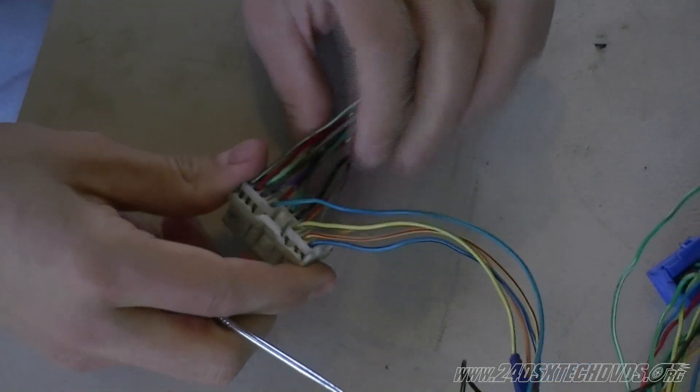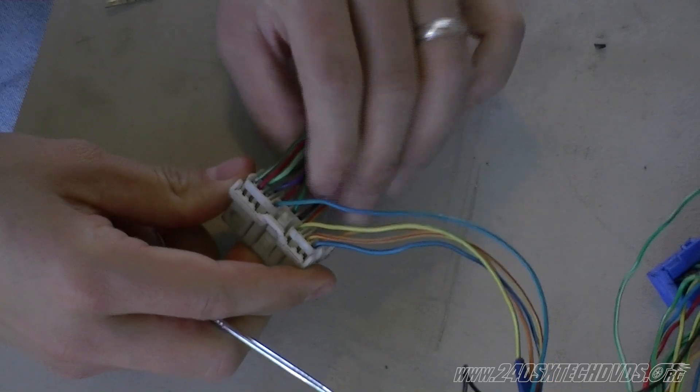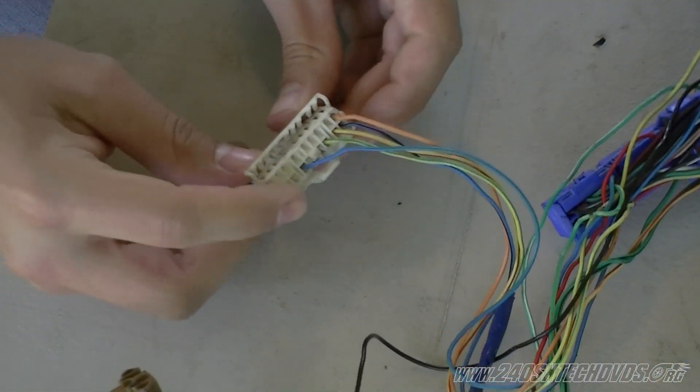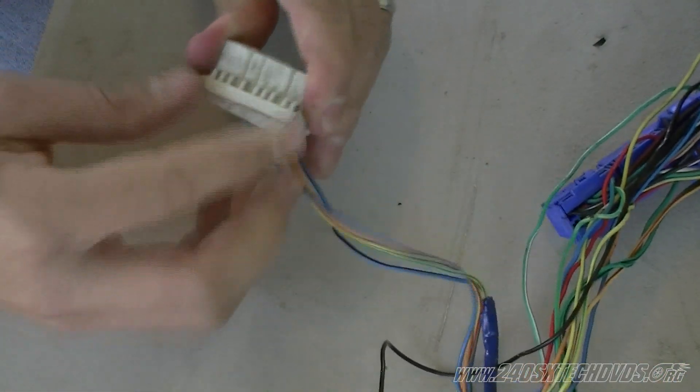Now we'll go ahead and remove all the other wires that we're not using on the single overhead connector here. So this connector is done. You want to go ahead and close it and lock it up.